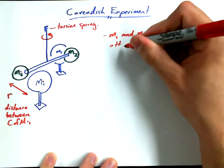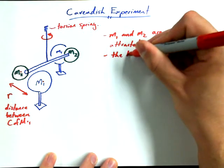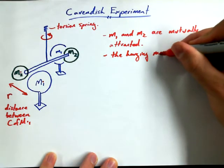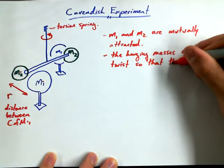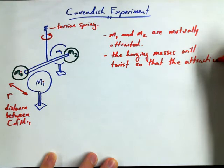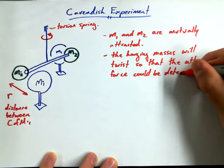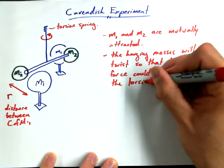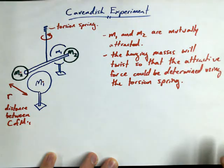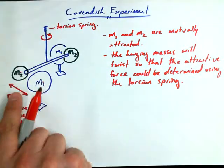It's just that mass two happens to be free to move. And I could say the hanging masses in this apparatus at least will twist so that the attractive force could be determined by the torsion spring. Yeah, the torsion spring would have to be fairly reliable, have to be consistent in how it twists, and we'd also have to have some sort of a calibration method to see how much, to connect how much this torsion spring twists to what the force must have been between these objects.